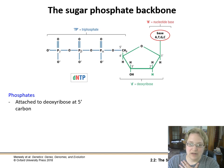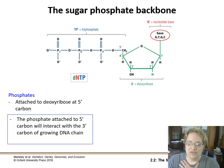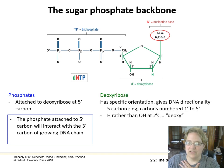The nucleotide base varies depending on whether it's adenine, thymine, guanine, or cytosine. The sugar-phosphate backbone is made up of the triphosphate groups and the sugar. The phosphate group is attached to the deoxyribose at the 5' carbon — ribose is a five-carbon sugar, so we've got carbons one through four and then the CH₂ group is the fifth carbon. That phosphate attached to the 5' carbon will interact with the 3' carbon of the growing DNA chain.